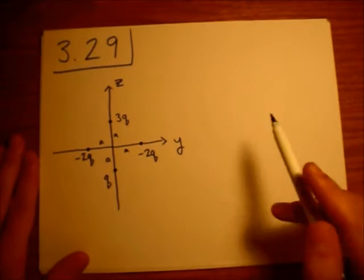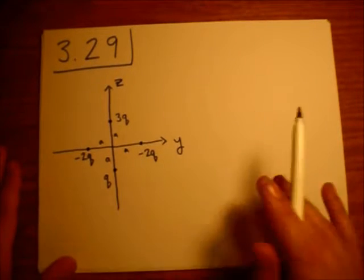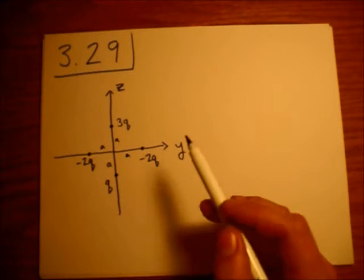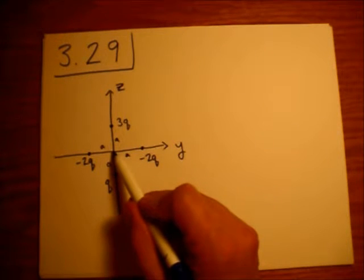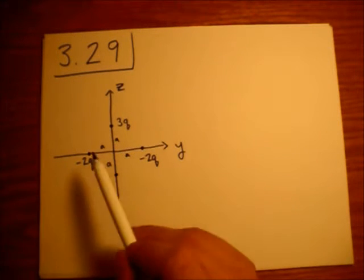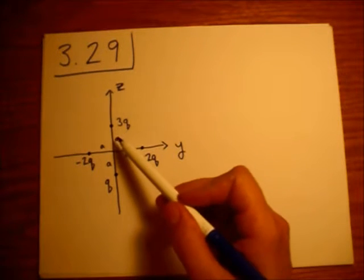We're going to be looking at this distribution of point charges. I don't know if you can see from this drawing or not. They're each at distance A from the origin. So, up along the positive z-axis,